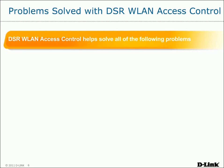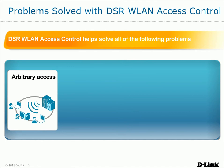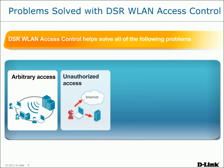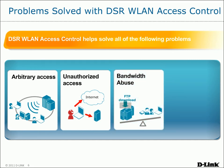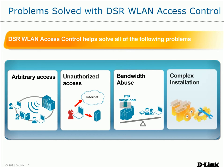D-Link's DSR WLAN access control helps solve all of the following problems. Arbitrary access can be controlled by creating different SSIDs with different access privileges for your different types of users. Captive portal prevents unauthorized access to your network, keeping intruders locked out. Bandwidth control prevents bandwidth abuse, preventing heavy guest traffic from slowing your mission-critical employee traffic. And finally, D-Link's DSR Unified Service Routers are easy to deploy and configure, avoiding the problem of complex installation.